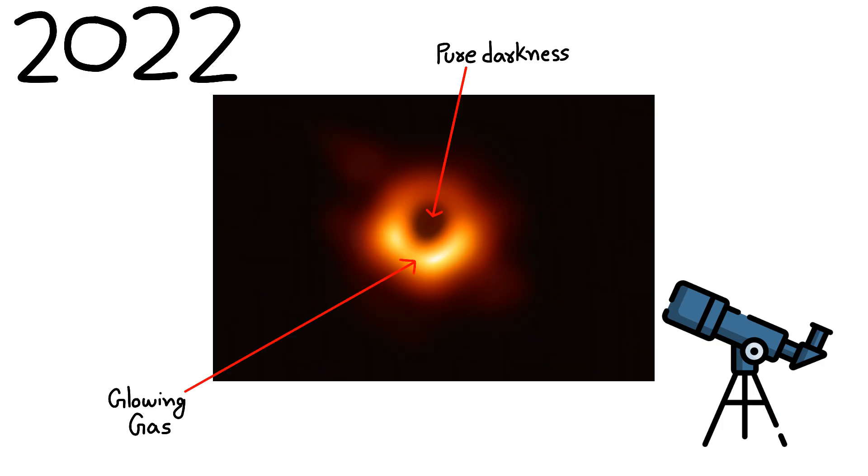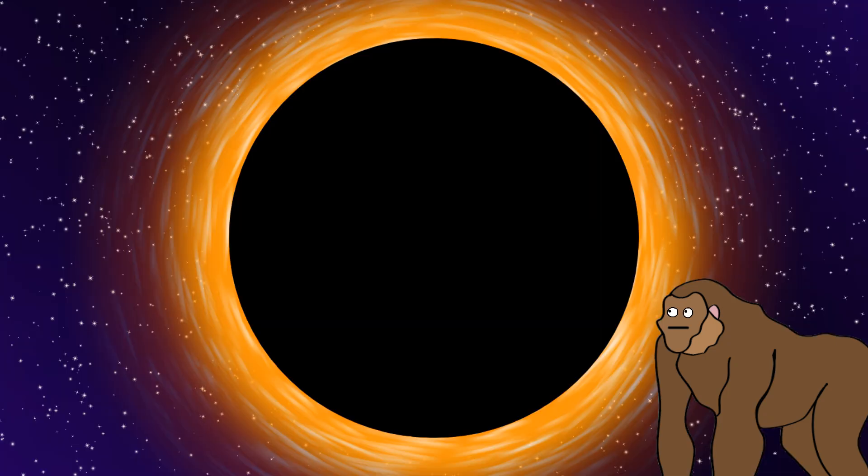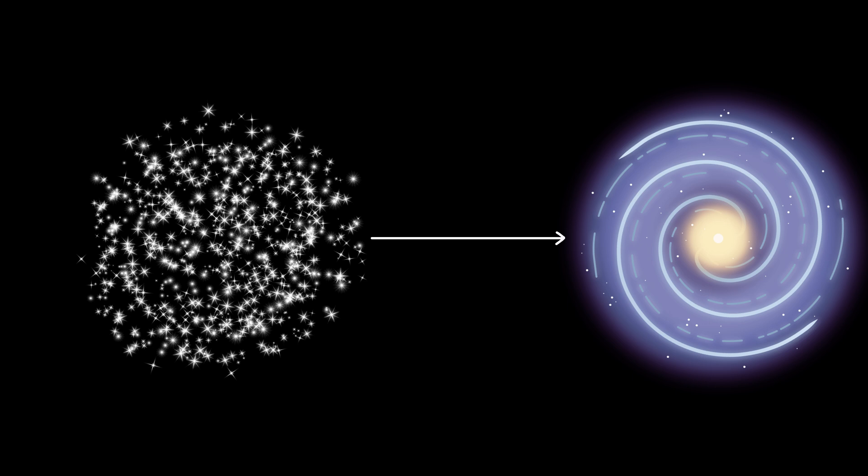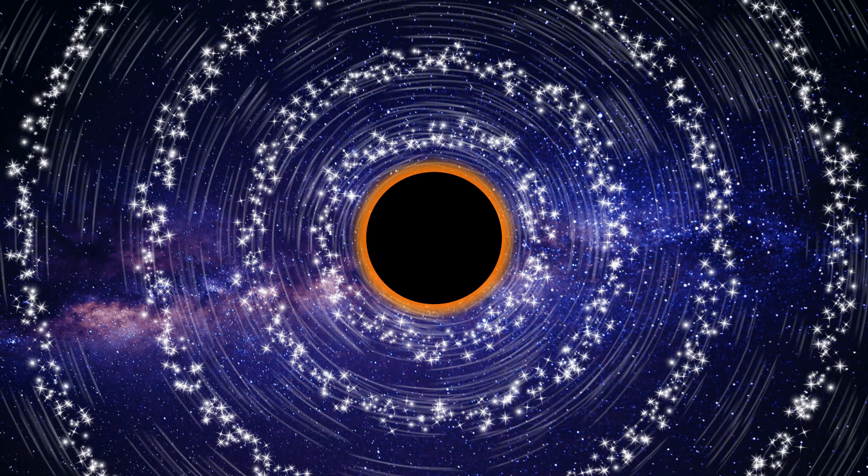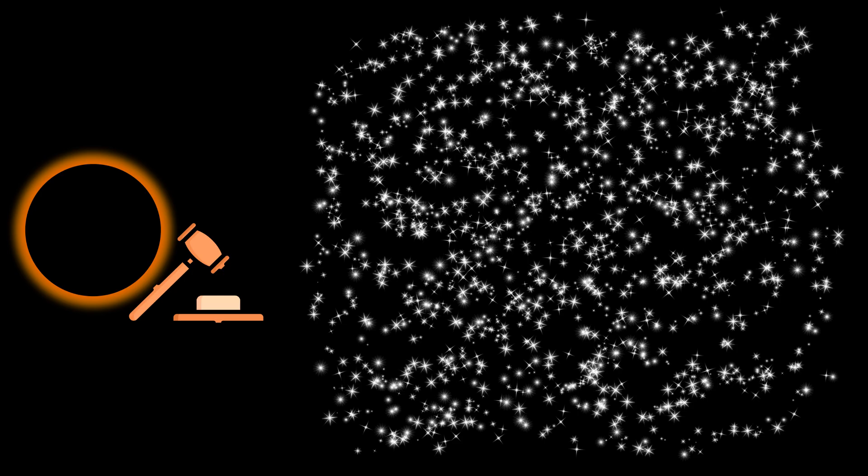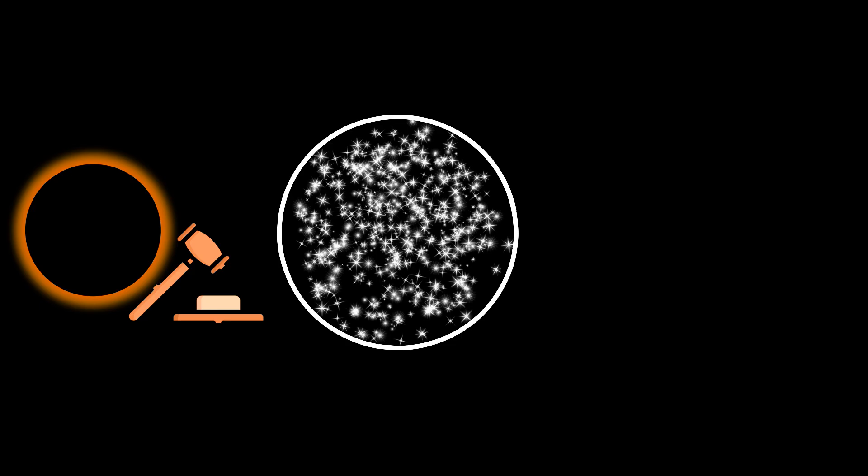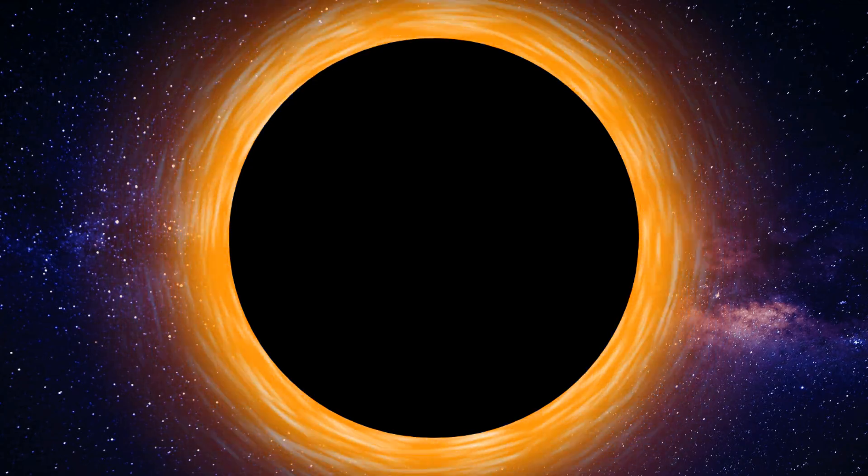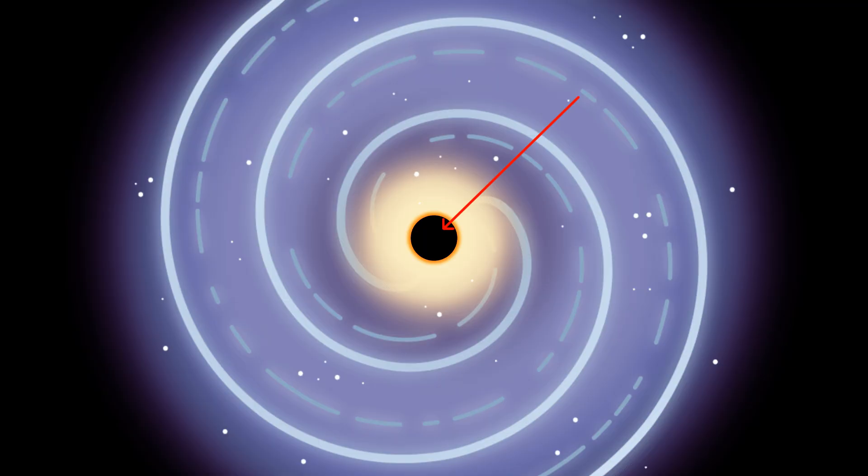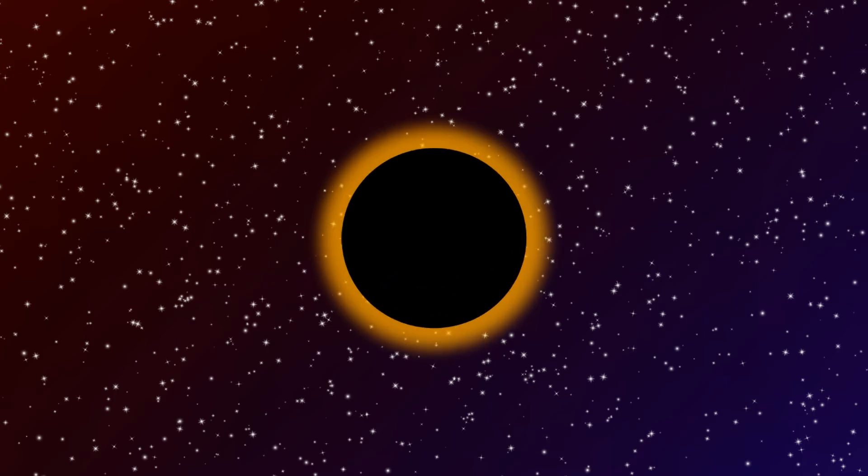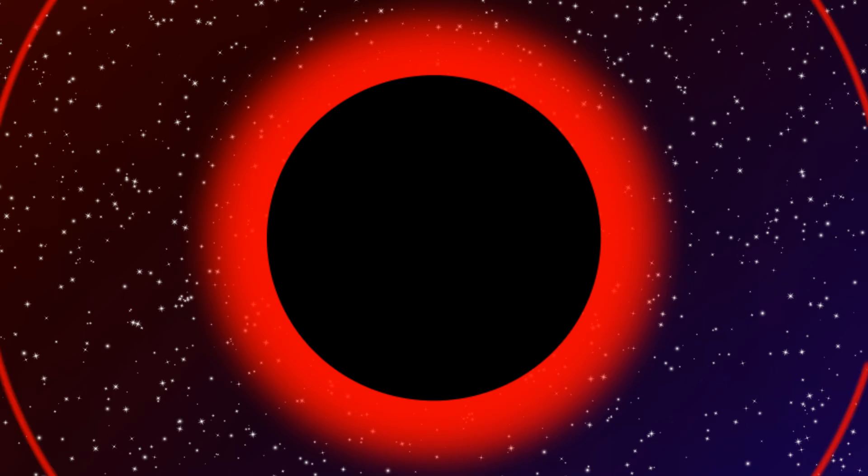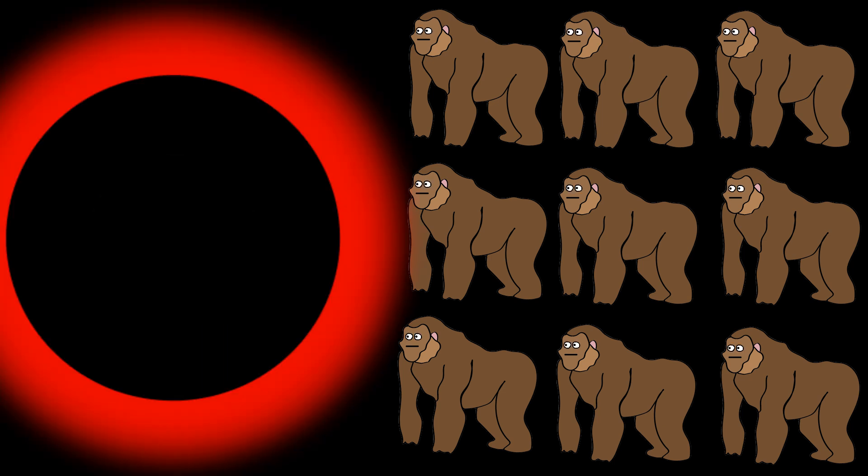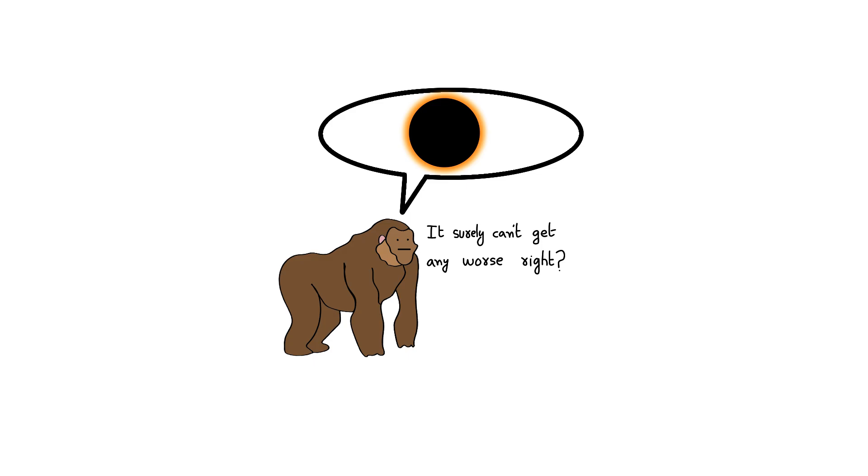What makes Sagittarius A* uniquely terrifying is its proximity and power. Every star in the Milky Way, including monkey's Sun, orbits around this invisible destroyer. It decides the fate of everything in the galaxy: where stars form, how fast they move, whether entire galactic neighborhoods live or die. Though Earth is currently far enough away to remain safe, Sagittarius A* serves as a constant reminder that even the heart of monkey's home galaxy is ruled by forces we can barely comprehend. Should it ever become more active by absorbing a dense cloud of matter, it could release powerful bursts of radiation with galactic consequences. It's a cosmic predator that's dormant now but could wake up hungry at any time.